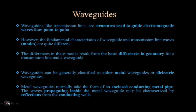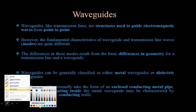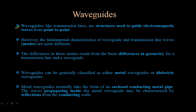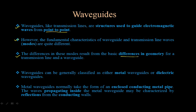The characteristics of waveguides: like a transmission line, waveguides are structures used to guide waves from point to point. However, the fundamental characteristics of waveguides and transmission lines are quite different. The differences in geometry allow some modes and disallow others. Transmission lines are made up of two conductors while waveguides use only a single conductor, which is why there are differences between the modes.